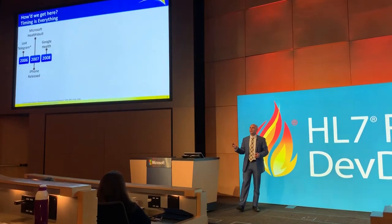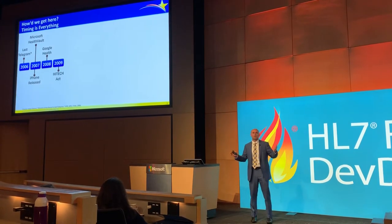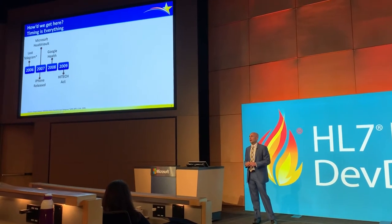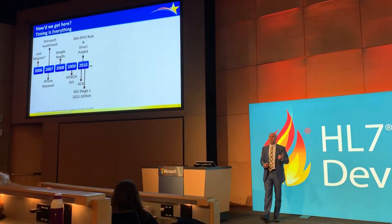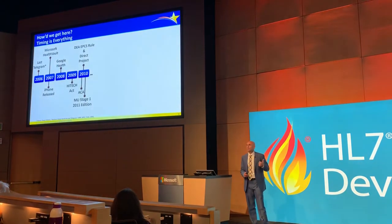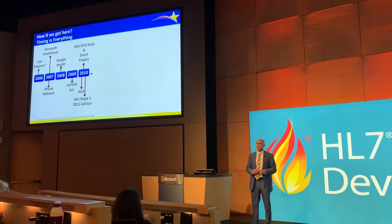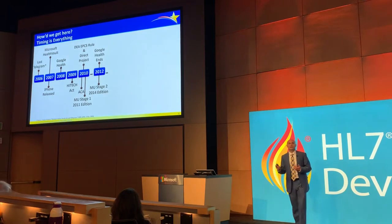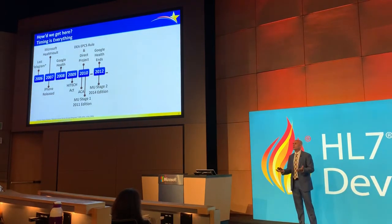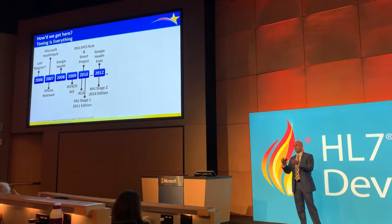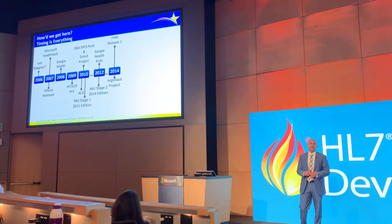Fast forwarding: 2008, Google Health; 2009, the HITECH Act — about $35 to $40 billion of federal investment in EHR adoption, one of the first big investments in platforms on which data is now available. 2010: the DEA's e-prescribing controlled substances interim final rule, the kickoff of the Direct Project, and the Affordable Care Act. Then Meaningful Use Stage 1 and our 2011 edition of certification criteria. 2012, Google Health ends. Meaningful Use Stage 2 and the 2014 edition rules were released, with Stage 2 starting in what was supposed to be 2014, moved to 2015.